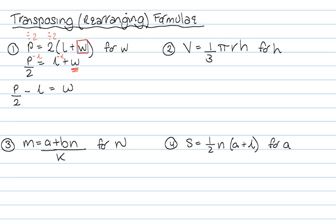In the next one that I have, V equals a third pi RH and H is what I want to get on its own. Now again, look at the front. This whole thing is being multiplied by a third. Now multiplying by a third is exactly the same as dividing by 3. So to get rid of that third, we multiply by 3.